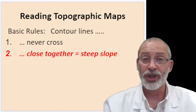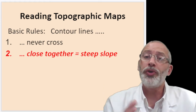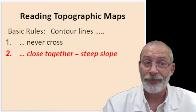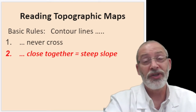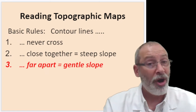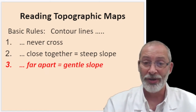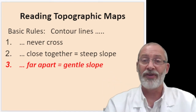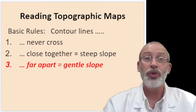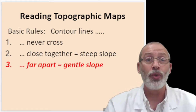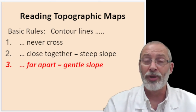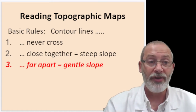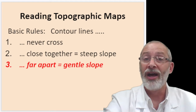Rule number two: the closer together the contour lines, the steeper the slope. The converse is also true — the farther apart contour lines are, the more gentle the slope. Looking at the spacing of contour lines helps you see how steep or how gradual the hills on a particular topographic map may be.